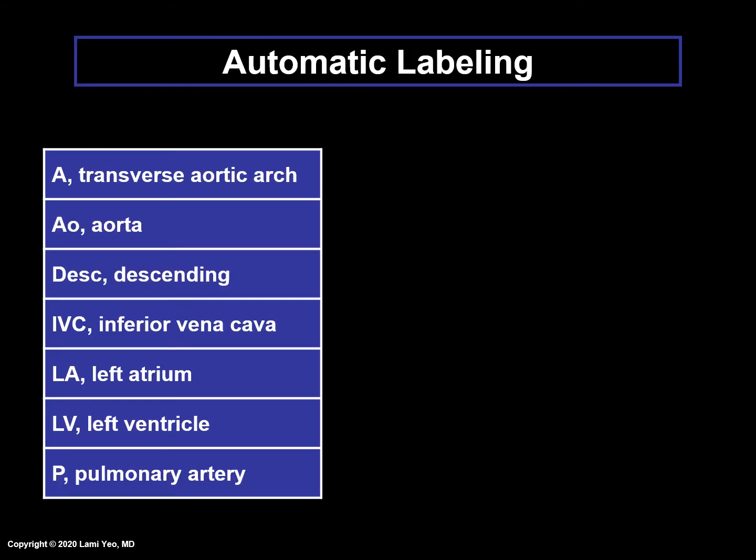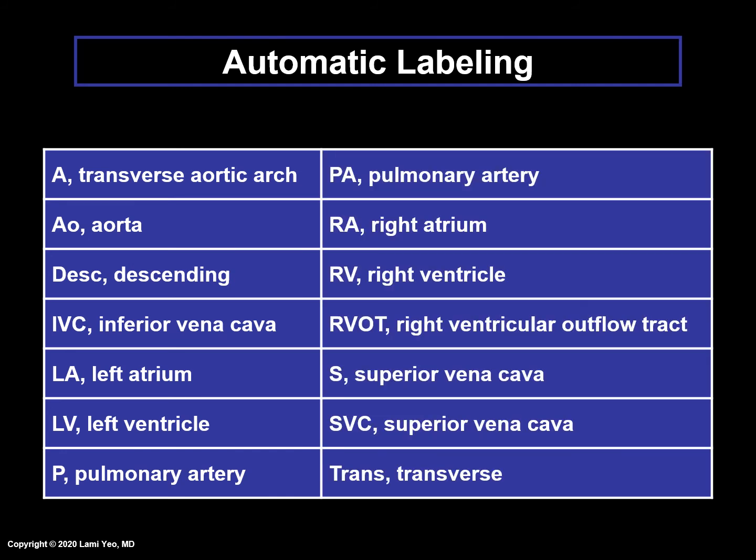This table lists all the possible labeling that exists in the cardiac diagnostic planes. For example, AO stands for aorta, and LA stands for left atrium. RV stands for right ventricle, while SVC stands for superior vena cava.